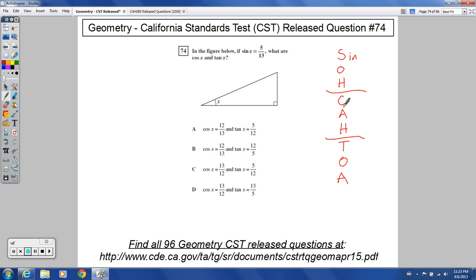but SOHCAHTOA puts the S, C and the T, the sine, cosine, and tangent together with the appropriate things there. So I think SOHCAHTOA is probably even a little better than Oscar had a headache over algebra to remember. So this is opposite over hypotenuse. Cosine is adjacent over hypotenuse, and tangent is opposite over adjacent.